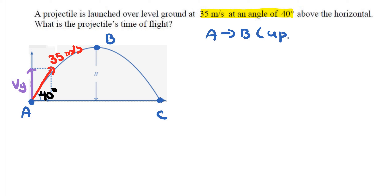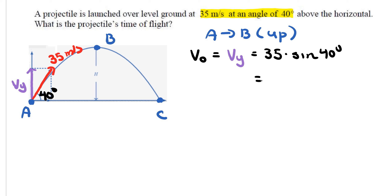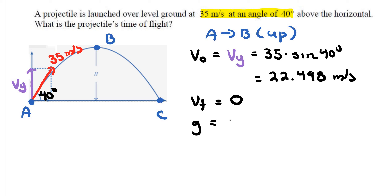From A to B, going upward, the initial velocity is the vertical velocity component Vy, equal to 35 times sine of 40 degrees, which is approximately 22.498 meters per second. At point B, the final velocity is zero. Acceleration due to gravity is negative 9.80 meters per second squared.